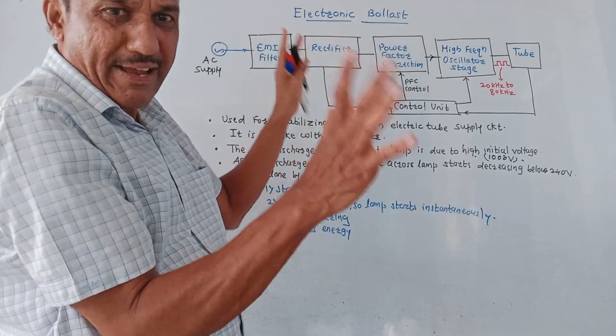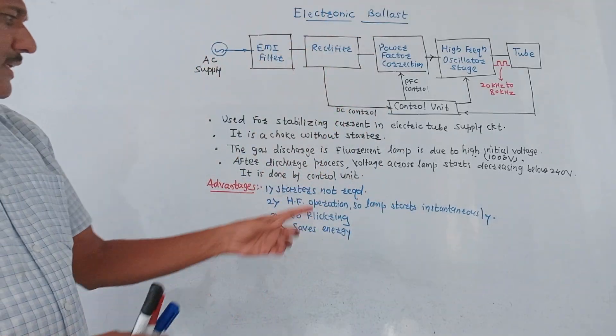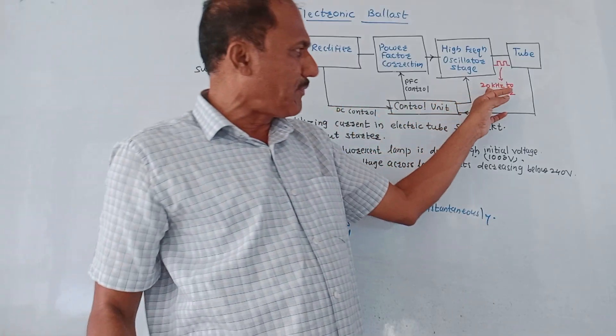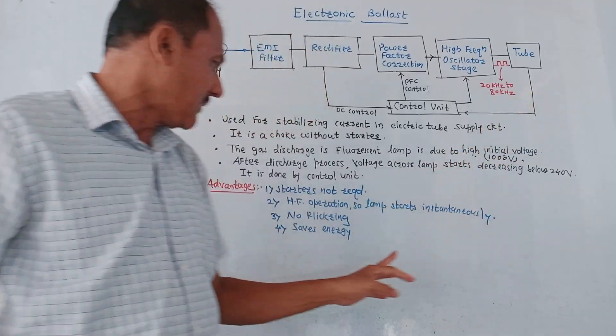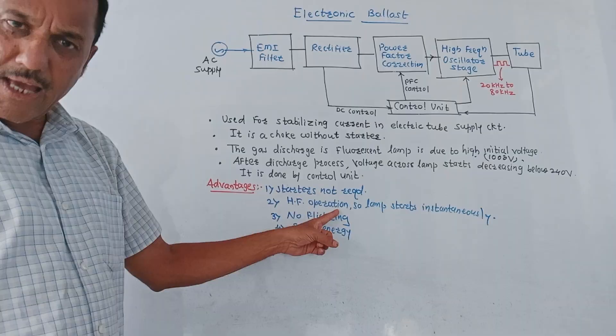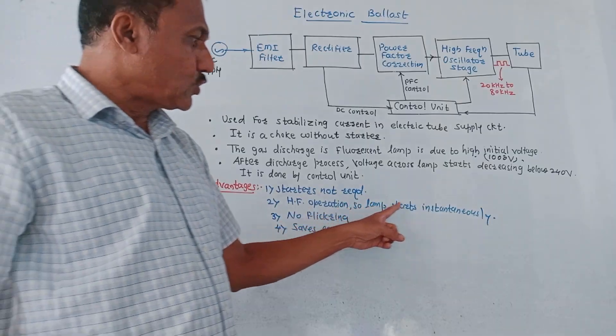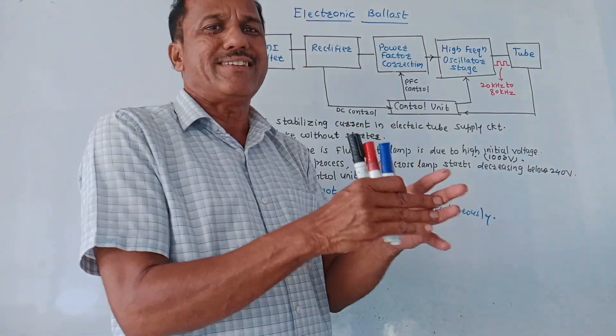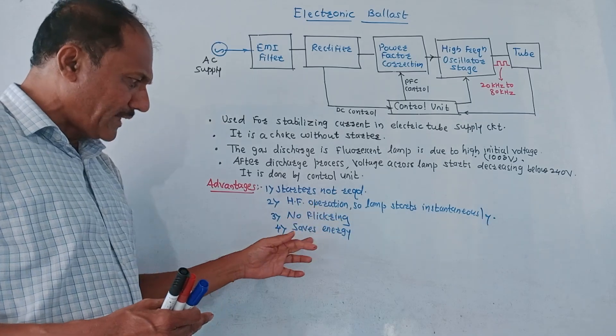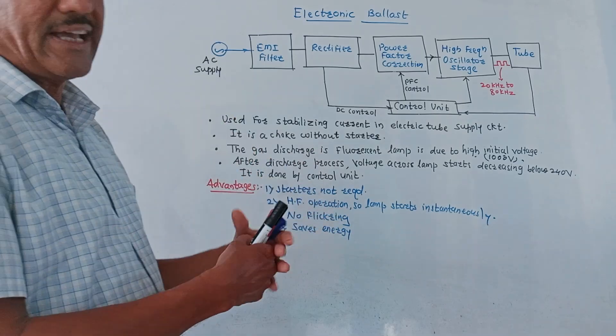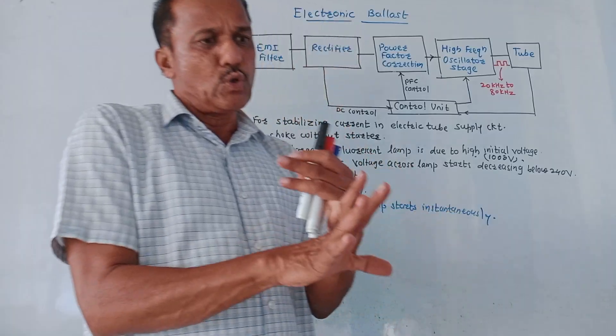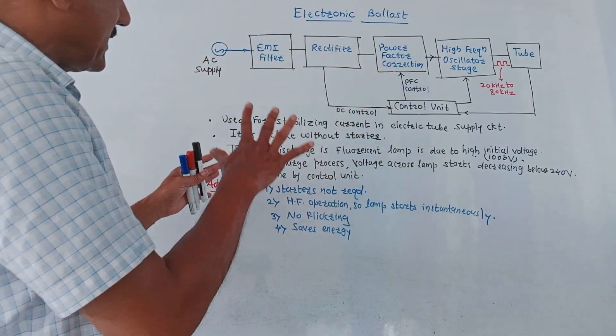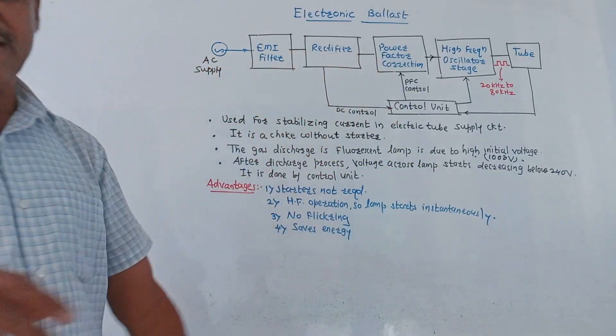Its advantages include: starters are not required; second, high frequency operation because it generates the frequency 20 kilohertz to 80 kilohertz. Because of this high frequency operation we can have instantaneous switch on of the lamp and there is no flickering. Third advantage is no flickering, and it can be used for energy saving purpose. Disadvantages include: the circuit is bulky in nature, the cost is high. So these are the major disadvantages as far as this electronic ballast circuit is concerned.